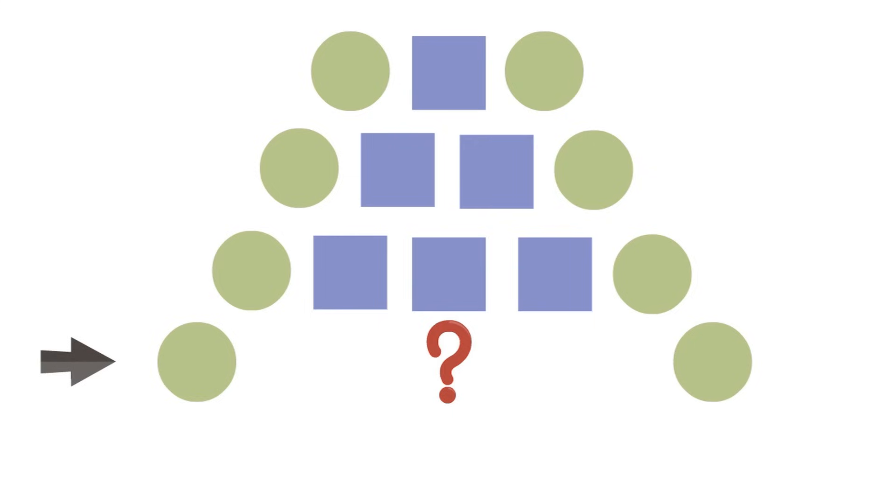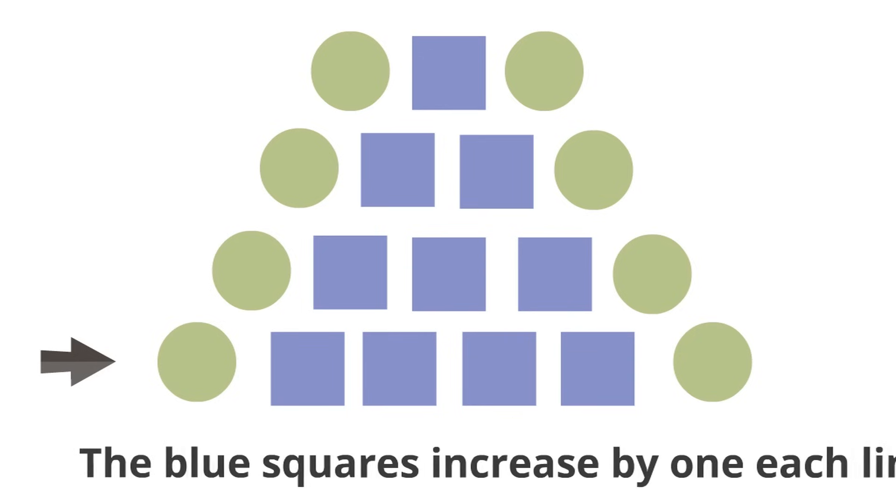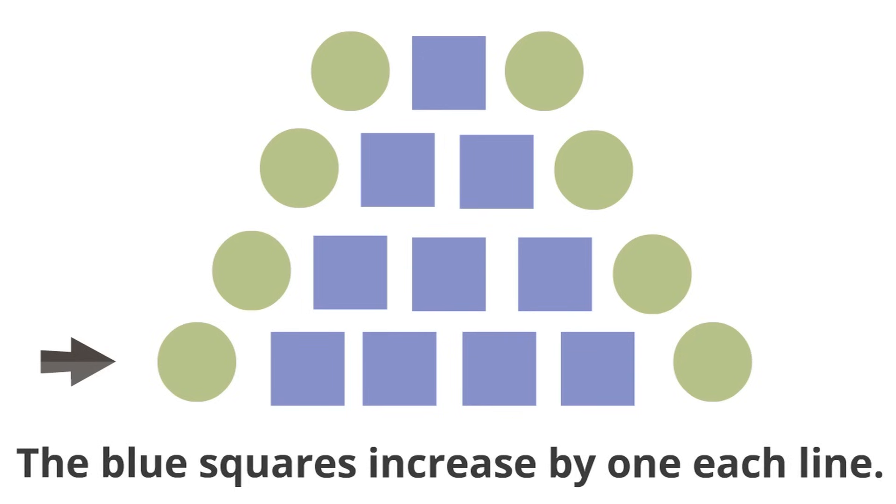So let's complete this pattern. How many blue squares are in this fourth line? Yeah, four! The fourth line has four blue squares in between the green circles. How can we know that? Well, the blue squares increase by one each line. The blue squares in between the green circles keep growing by one every line. That's how this pattern works. Great job.